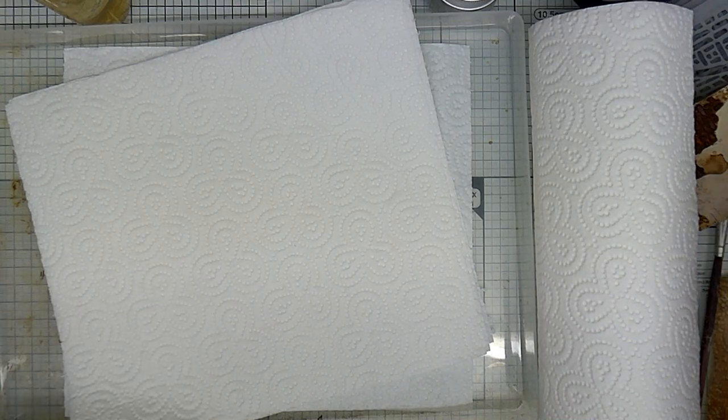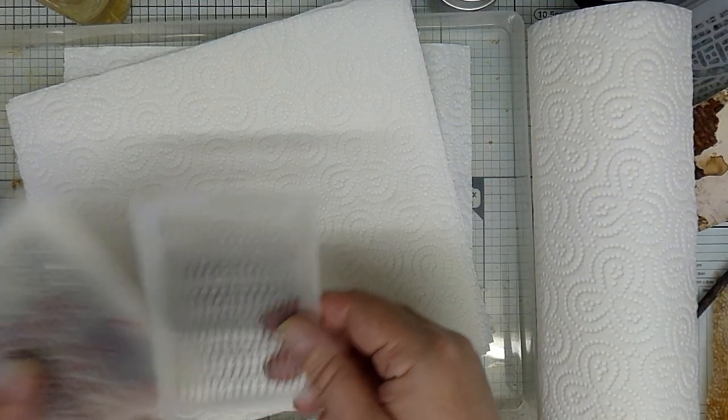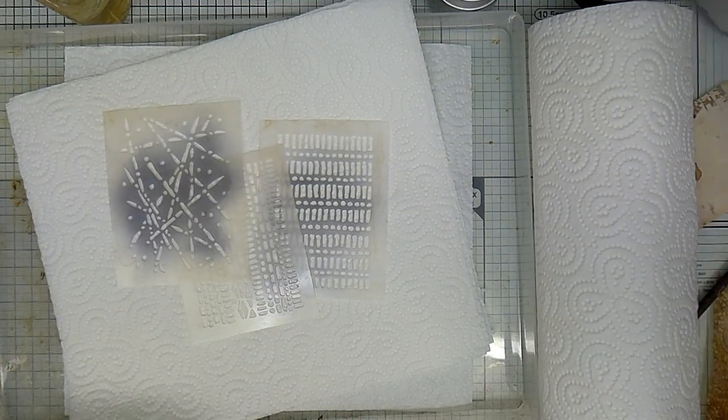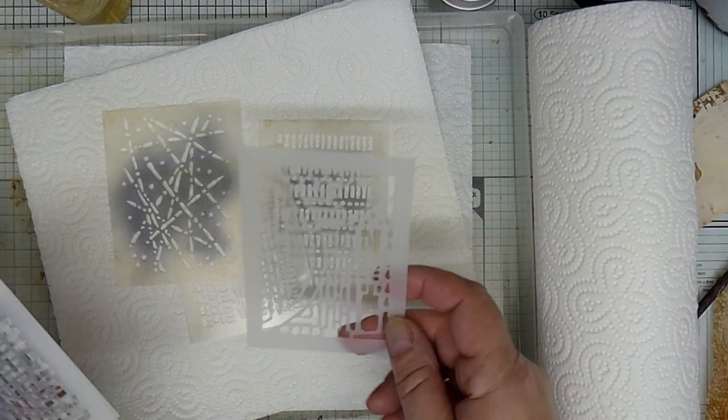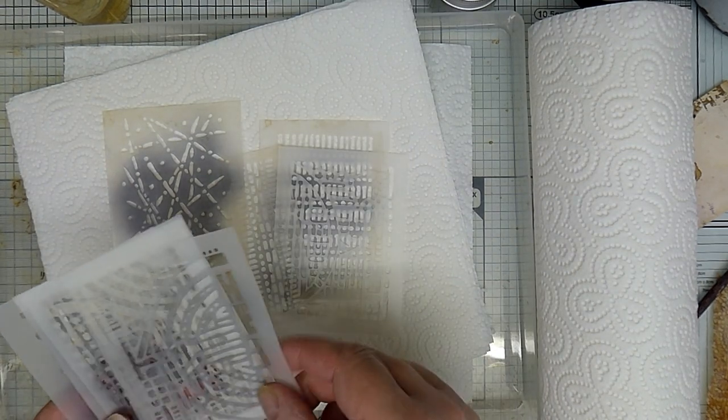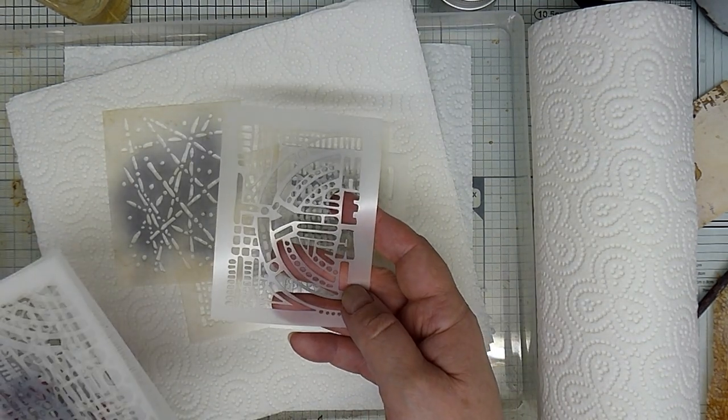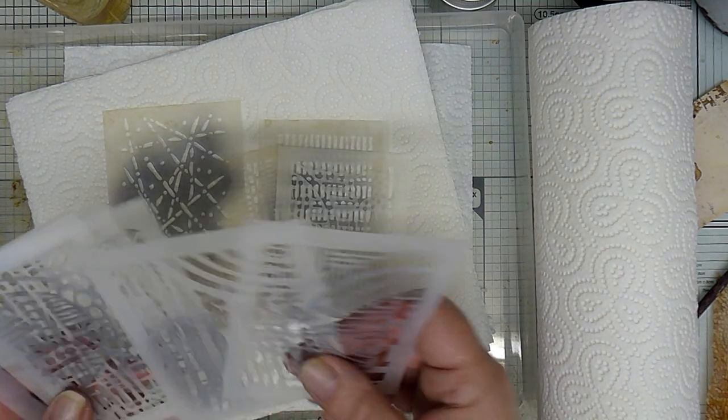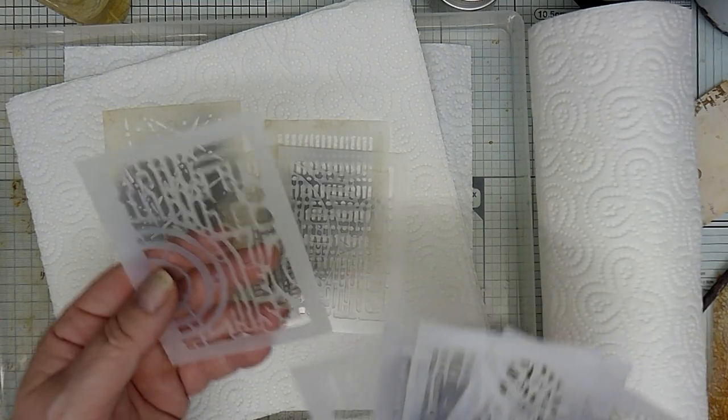I've also got a stencil. Now these stencils here are from a set by Stencil Girl by Seth Apter. They come in an A4 sheet and I've just cut them apart.